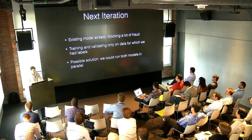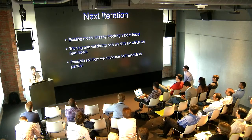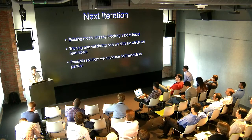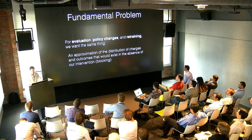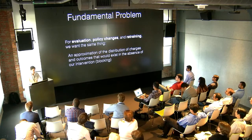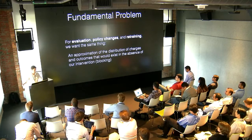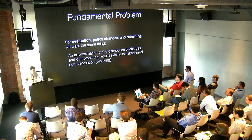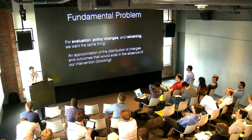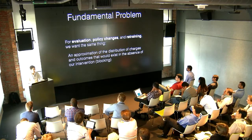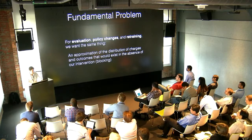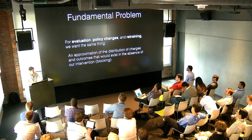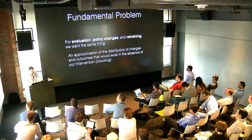What we really want in both cases — evaluating production performance and retraining new models — is an approximation of the distribution of charges that would exist in the absence of our prevention. We have all these charges in the world: some get disputed, some refunded, some are fine. We block some fraction of them. When we train, we want to assemble some approximation of that original distribution.